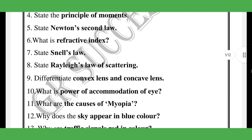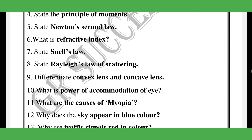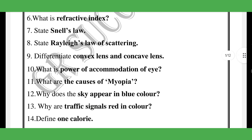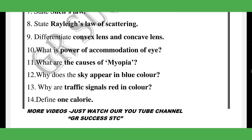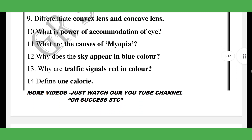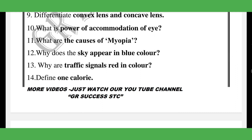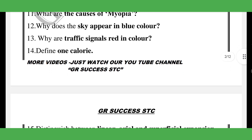Question number seven is Snell's law. Next important questions include: why does the sky appear blue in color, and why are traffic signals red in color. Question 14 is to define one calorie — this is a most important question.